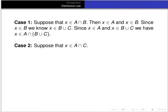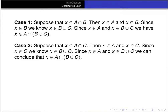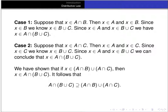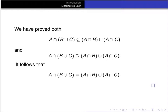Case two: x is in A∩C. Then x is in A and in C. Since it's in C, it's in B∪C. Since it's in A and in B∪C, we conclude x is in A∩(B∪C). So we've shown that if x is in (A∩B)∪(A∩C), then x is in A∩(B∪C). Therefore (A∩B)∪(A∩C) ⊆ A∩(B∪C). We've proved both subset relations, so it follows that A∩(B∪C) = (A∩B)∪(A∩C).